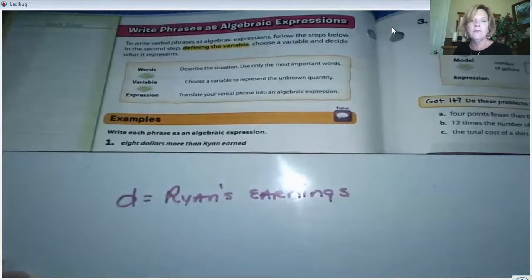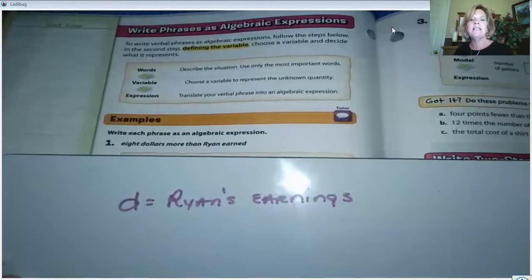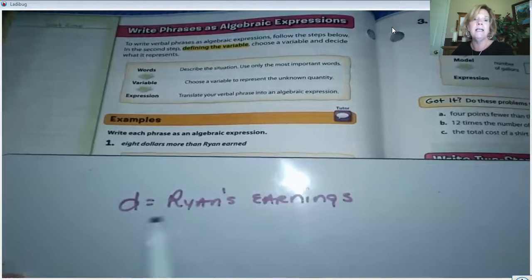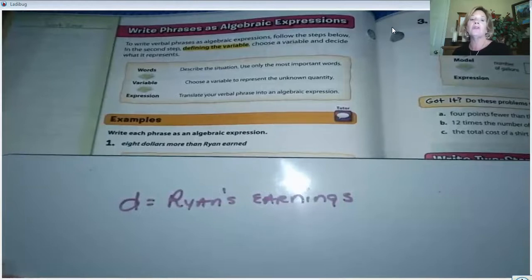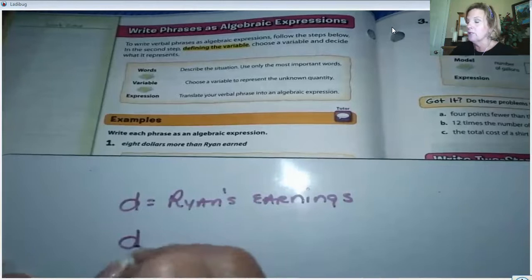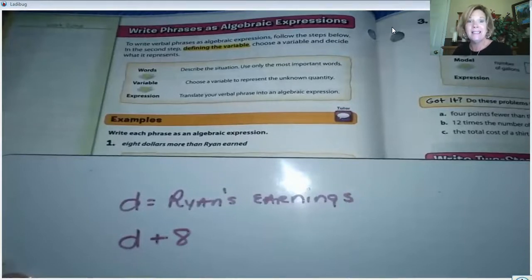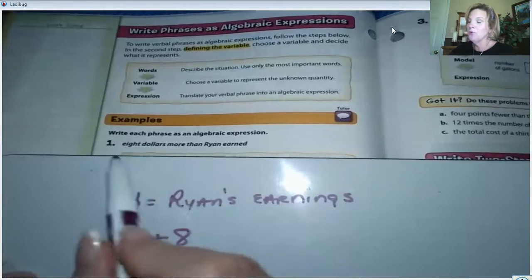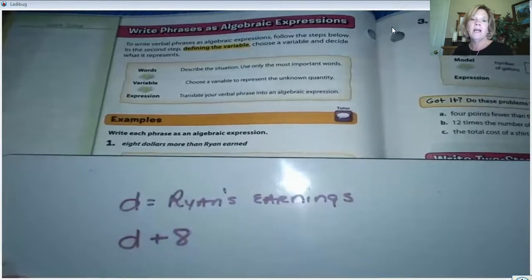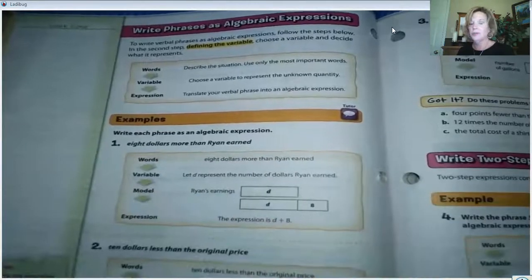This is defining the variable. D represents or means Ryan's earnings. To write the expression '$8 more than Ryan earned,' we're going to take what Ryan earned and add $8 to it. So we just write the phrase as an algebraic expression — D + 8. That's it. Let's do another one.